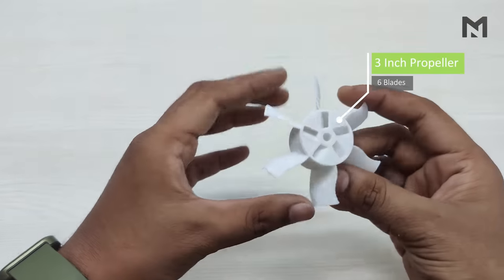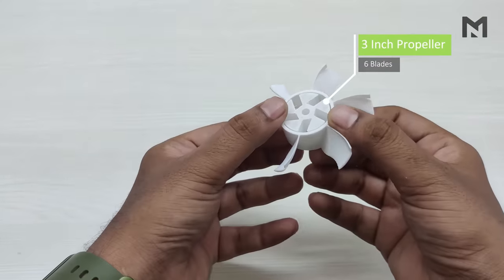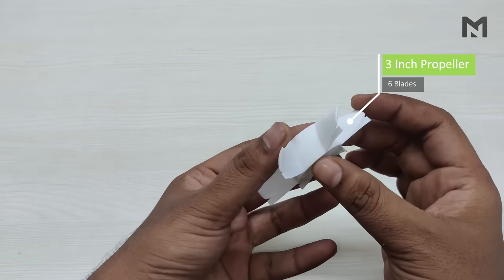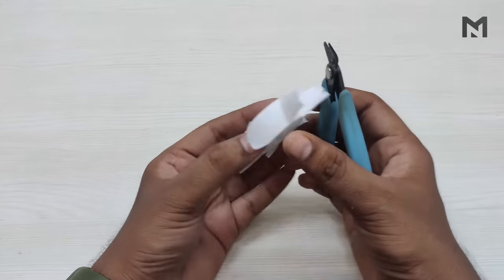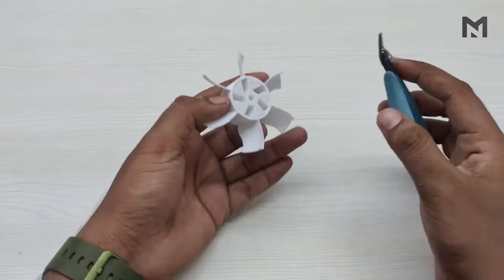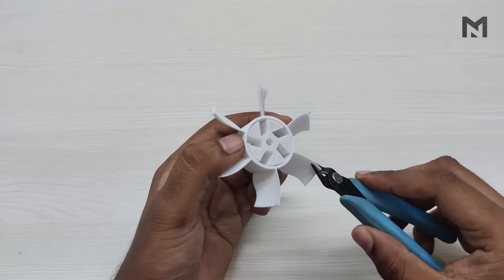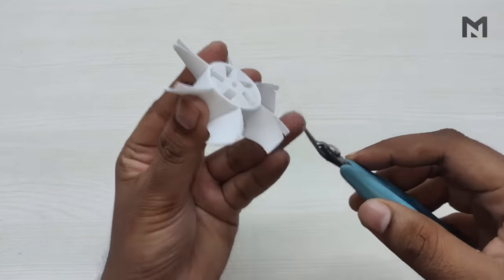Now we will remove support from the propeller. This is a three-inch propeller with six blades designed for any motor with a shaft diameter of 5mm. Grab a wire cutter and carefully look for the line of joining of the support. Look carefully as both the blade and supports are of same thickness.